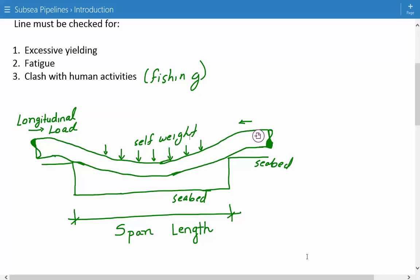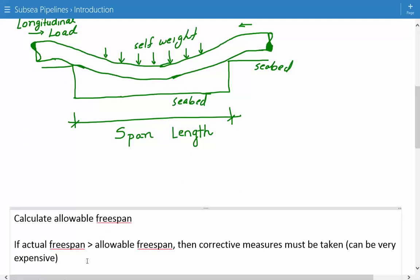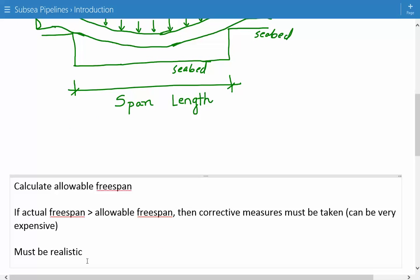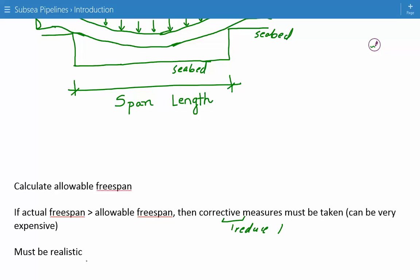So as a designer, you have to take a look and calculate an allowable free span. How much are you going to allow? And if the actual free span is greater than the allowable free span, then corrective measures must be taken. And these corrective measures can be very expensive and are intended to somehow reduce the span. So because it is so expensive to take corrective measures,